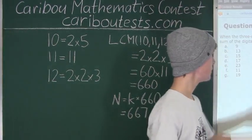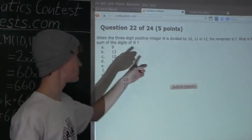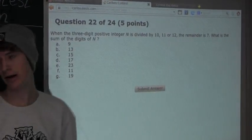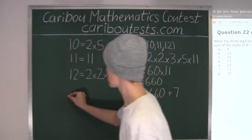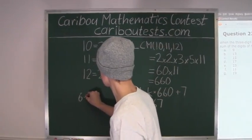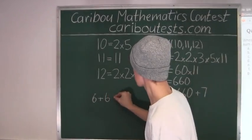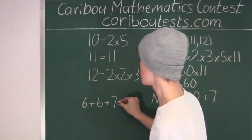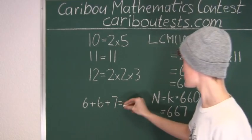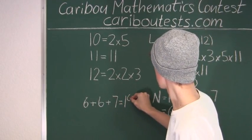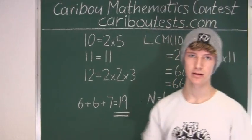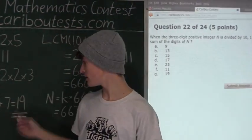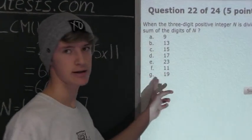And now the final step is to find the sum of the digits of N. The digits are 6, 6, and 7. So we do 6 plus 6 plus 7. 6 plus 6 is 12 plus 7 is 19. So the sum of the digits of N is 19.